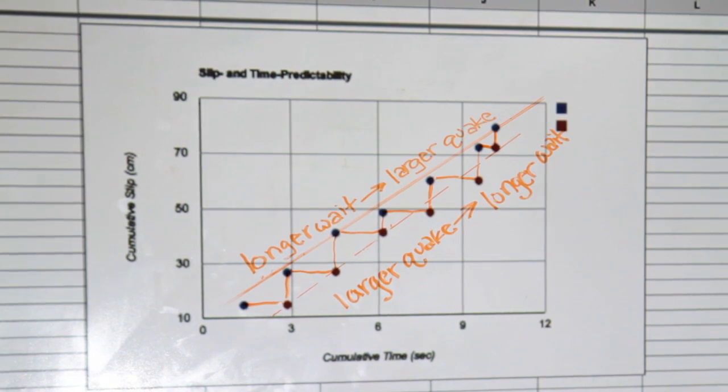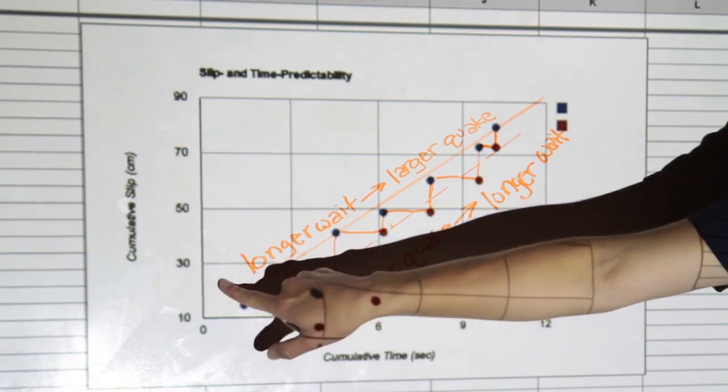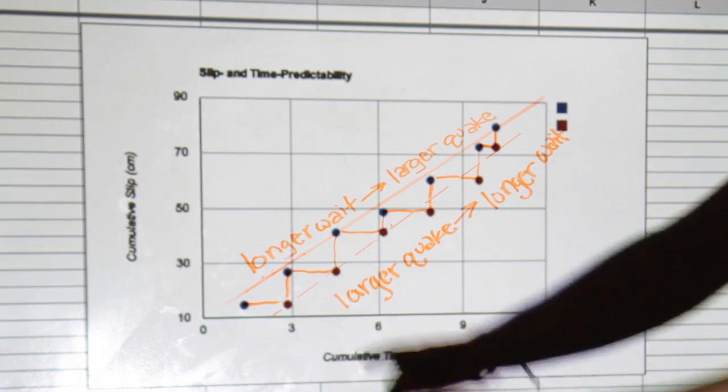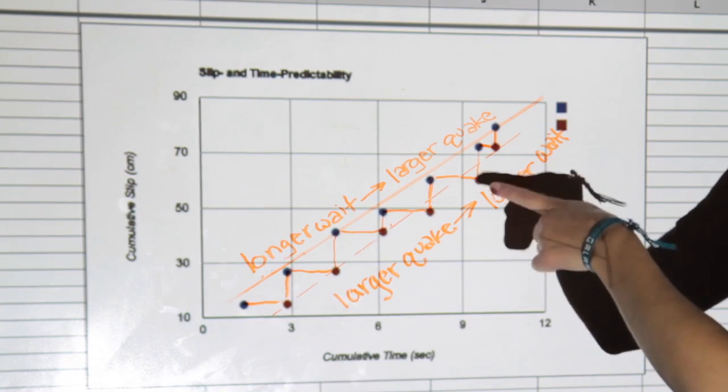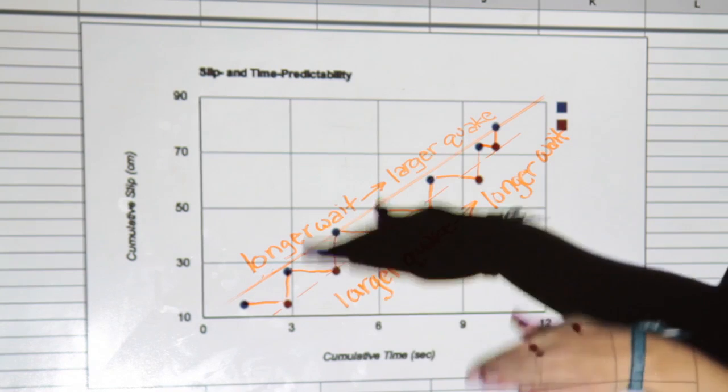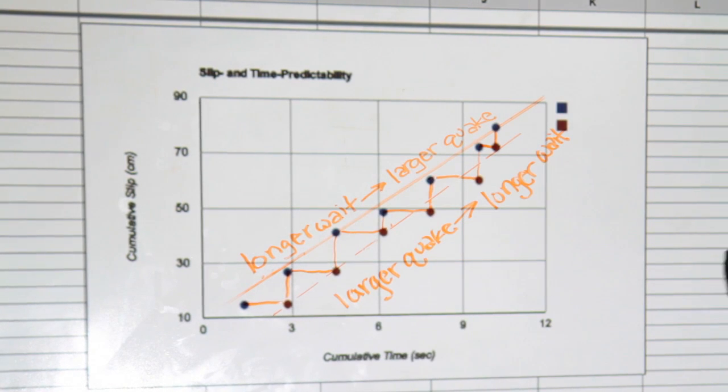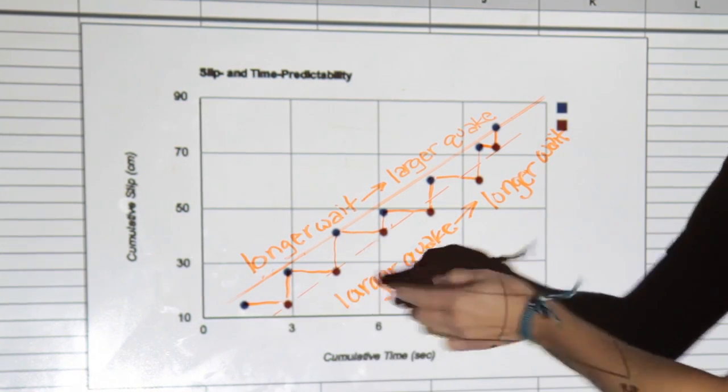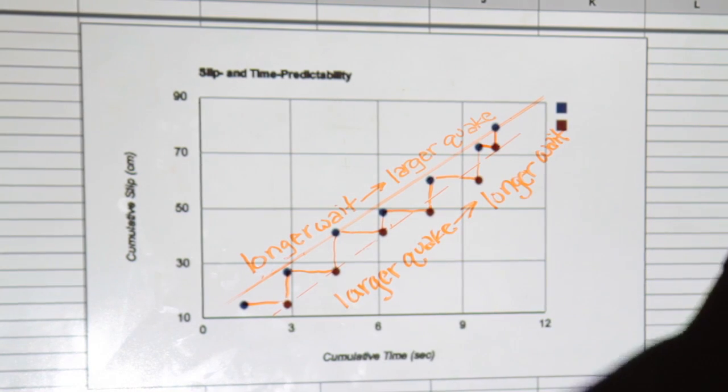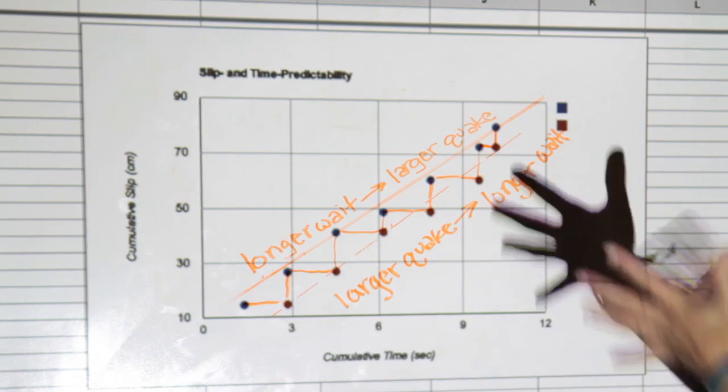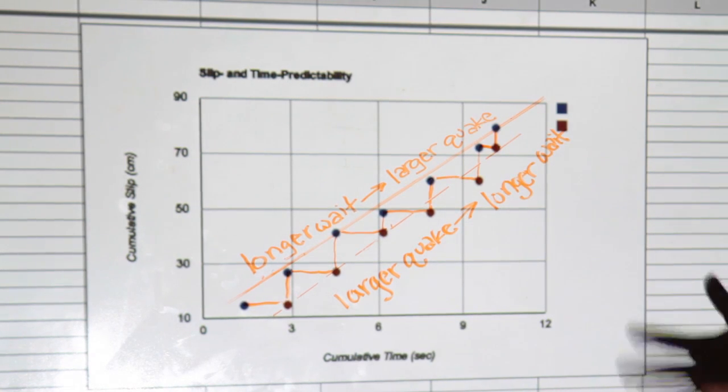So I've just eyeballed and drawn in the best fit lines for the slip predictable hypothesis, and the time predictable hypothesis. The slip hypothesis states that the longer the wait, the larger the next earthquake will be, and the time hypothesis states that the larger the last earthquake, the longer the wait until the next one. Now if we look at our data, we see variability in terms of wait times. There's longer wait times, and then there's shorter wait times, and there's variability in the slip distance. Again, larger, smaller slip distances. So there's not a lot of consistency.